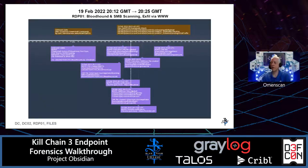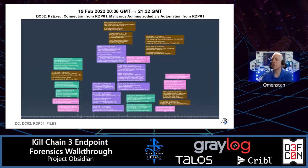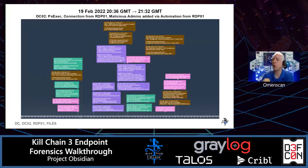Here we're seeing the timeline. We'll see several slides, but I just wanted to cover the kinds of things that we'll see in today's presentation. We'll see some BloodHound being run in the environment, SMB scanning, connections from a machine called RDP01 to domain controllers. We're going to focus mostly on three machines: RDP01, which is the source of where the attacks came from, and then some activity on the domain controllers.